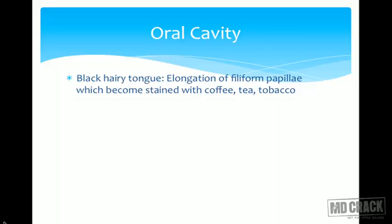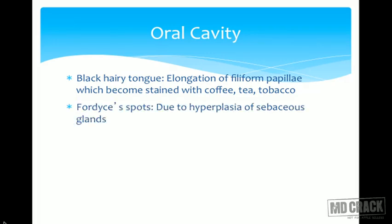Black hairy tongue is the elongation of highly formed papillae which become stained with tea, coffee, or tobacco. Fordyce spots are due to hyperplasia of the sebaceous glands; some spots can be seen on the tongue, and they are known as Fordyce spots.